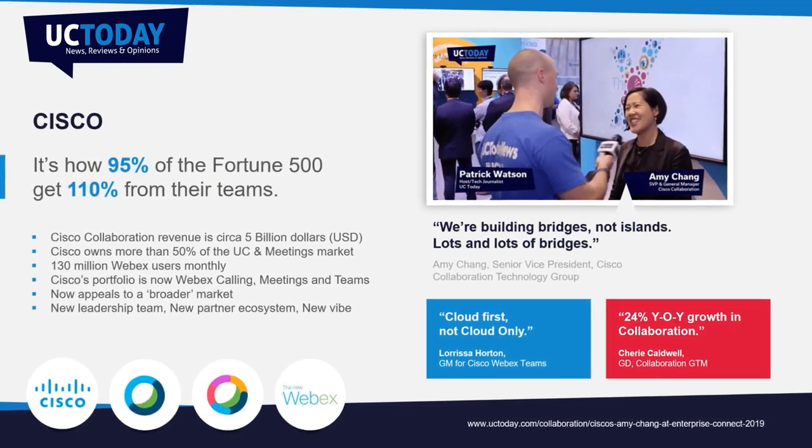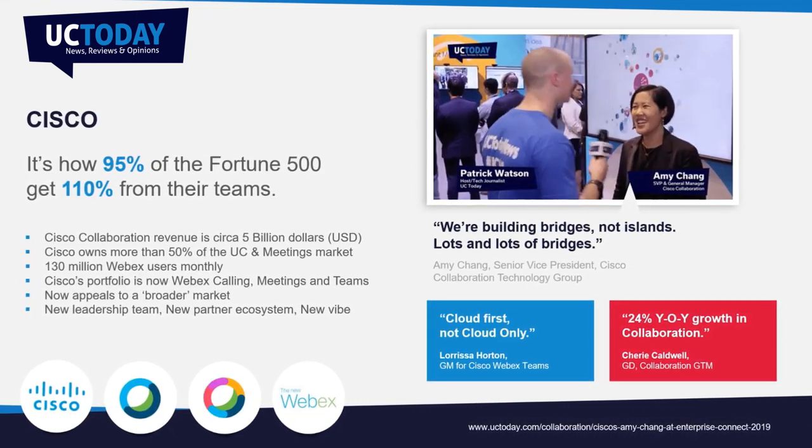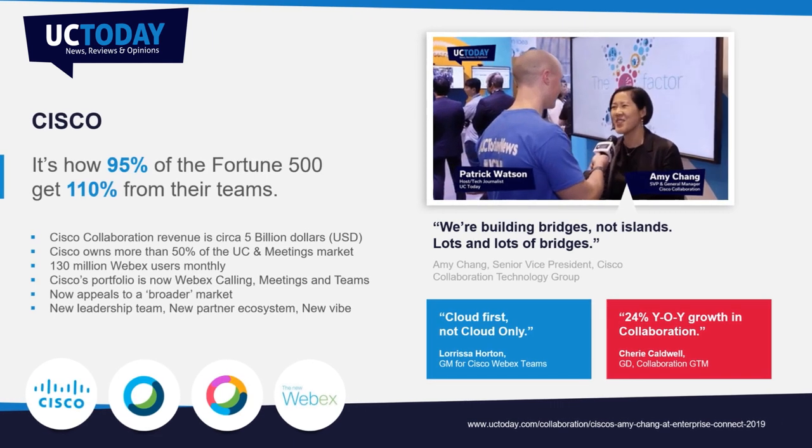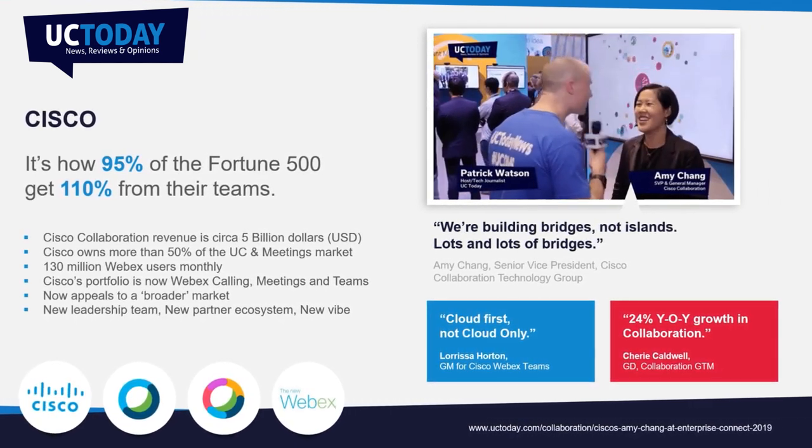Now we've defined the UC stack, let's look at Cisco's offering. They're arguably one of the two biggest players alongside Microsoft. Their collaboration unit is a $5 billion business and they potentially control over 50% of the market. They have a huge wealth of experience in the enterprise space, and since the BroadSoft acquisition last year they now own more than 50% of the market. The BroadSoft acquisition made it a lot more interesting — they now appeal to a much broader market with service providers globally and more partners. It is a complex story, but hopefully we can tell a little bit more about their portfolio.